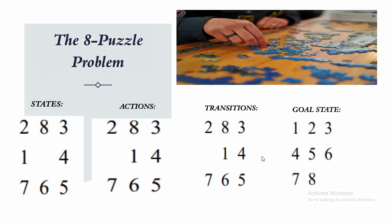Next is transition. Transition represents the changes in states that result from taking an action. For example, if the action is to slide tile 1 to the right from the above state, the resulting state is as given in this diagram. And the last one is the goal state, which represents the target configuration that needs to be achieved. For example, the goal state for the 8 puzzle could be this.